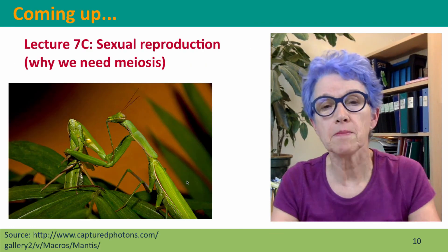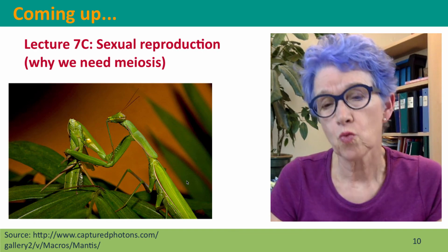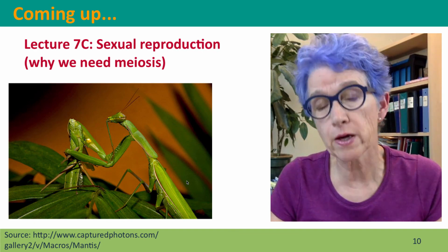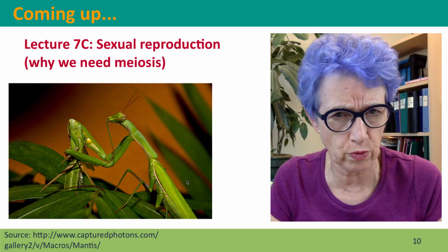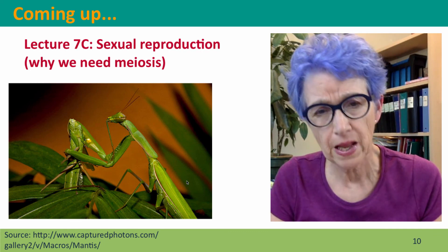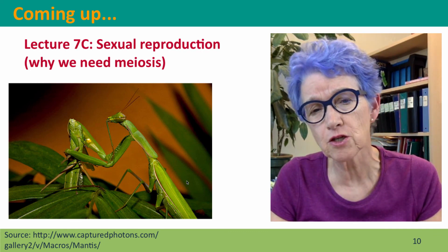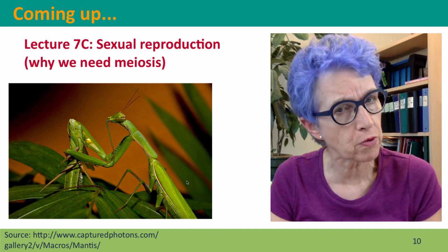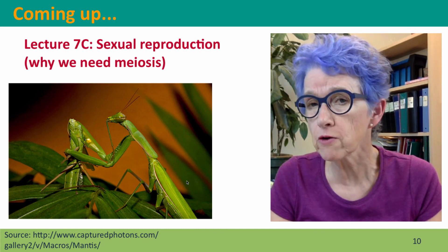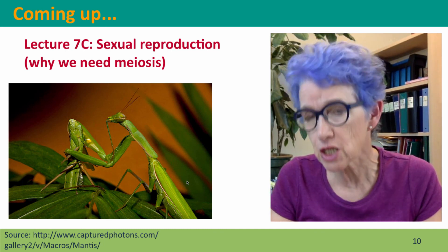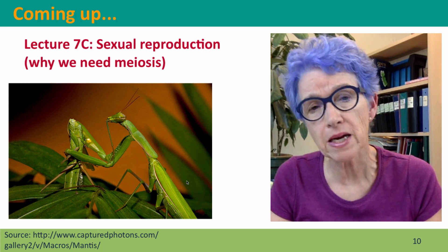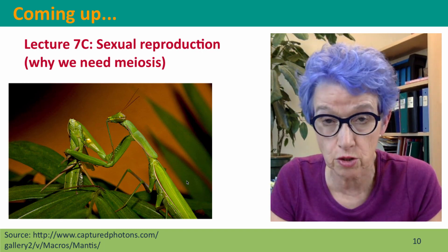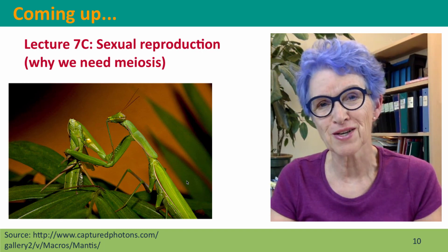Coming up next, we're going to start thinking about meiosis by thinking about sexual reproduction. Then we're going to get into how meiosis works, what meiosis's problem is, and how it solves it by essentially using the same mechanism and the same tools that mitosis uses. I hope to see you there.